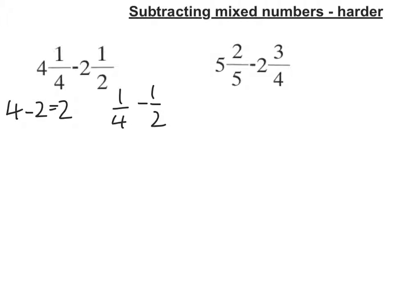So quarter take away half, we've got to get a common denominator. The common denominator of a quarter and a half is 4, so the first fraction doesn't need to change. The second fraction, I've multiplied the bottom by 2, so I need to times the top by 2, so I'm going to get 2.